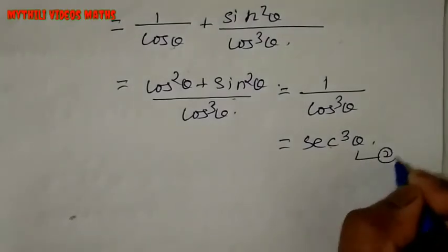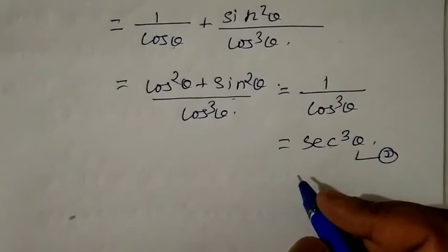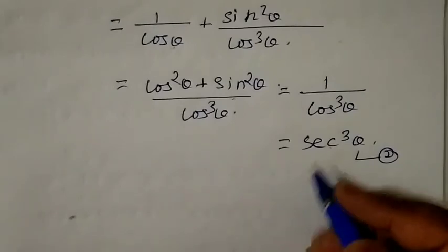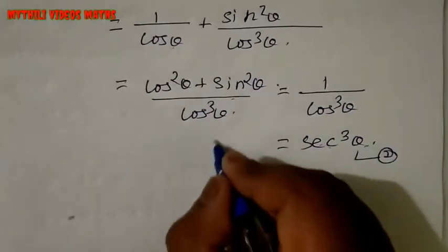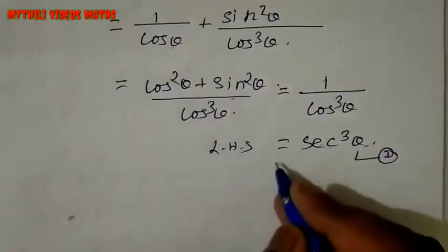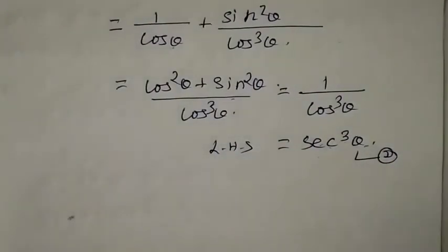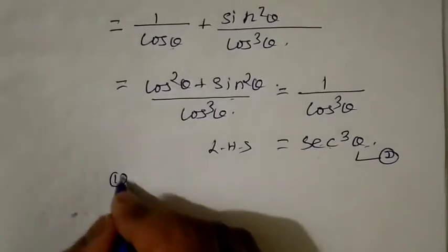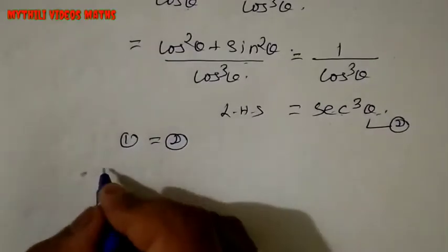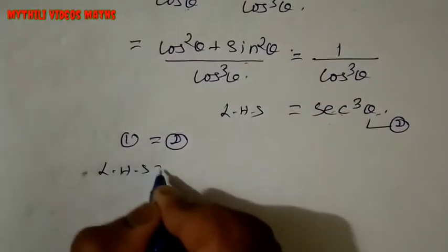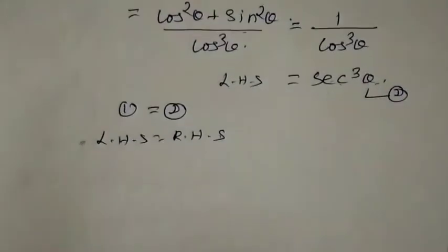This is equation number 2. So the RHS is proven to be sec cube theta. Now the LHS equals sec cube theta as well. Equation 1 equals equation 2, that is LHS equals RHS.